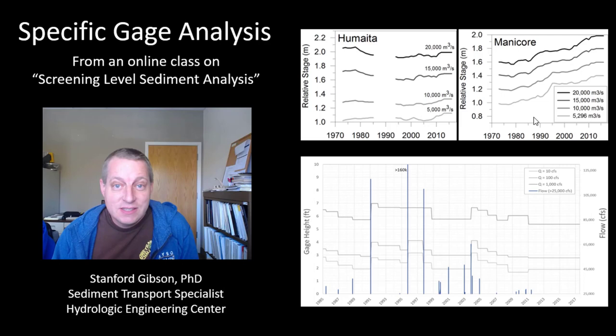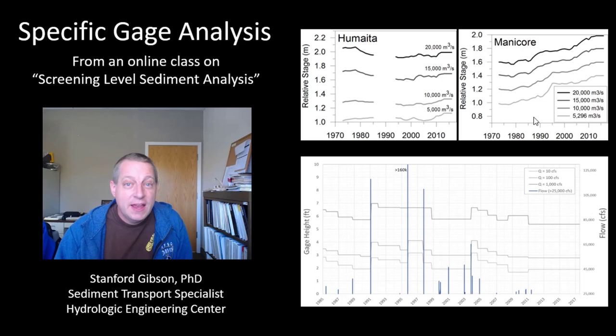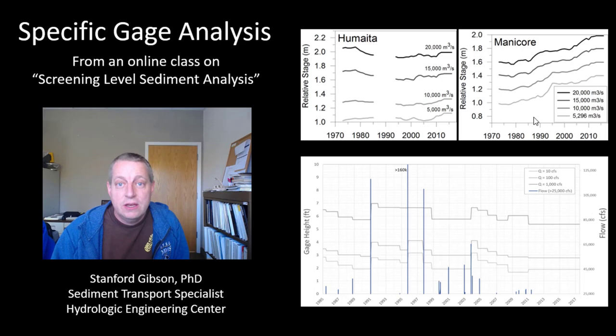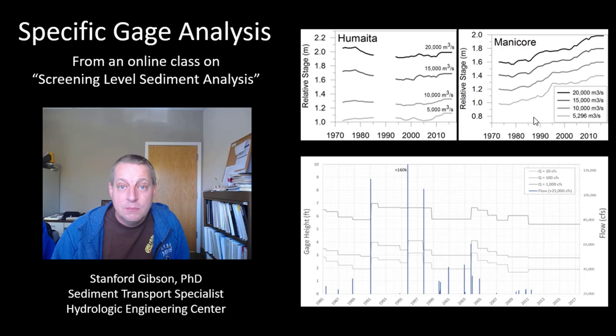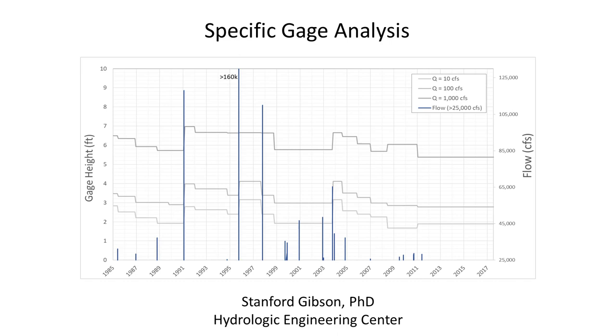Hello, my name is Stanford Gibson. I'm the sediment transport specialist at HEC in charge of the sediment transport capabilities in HEC-RAS. This is a talk I gave during an online class on screening-level sediment analysis — specifically on specific gauge analysis. This talk followed a session on how to interpret cross-section change to do a morphological analysis, but this one asks: what if you don't have any cross-sections? Can you still make some morphological inferences about the historic trajectory of your channel? It looks at how we can use specific gauge analysis to do that.